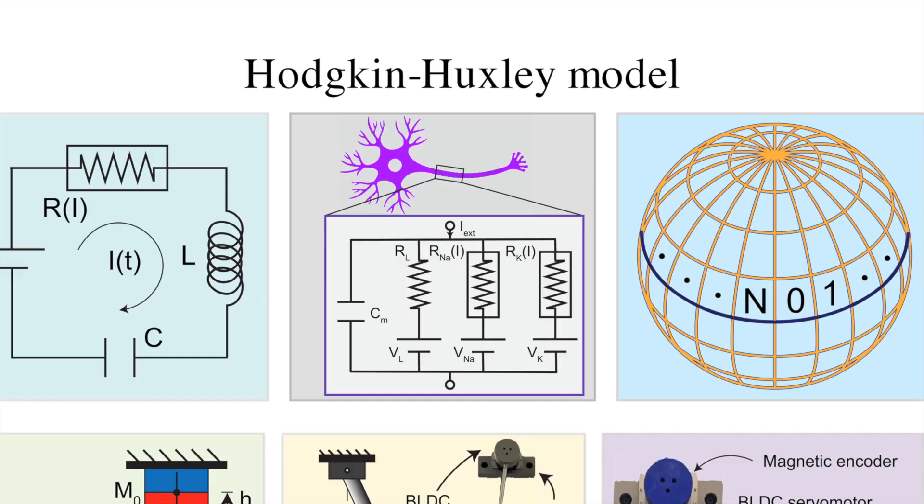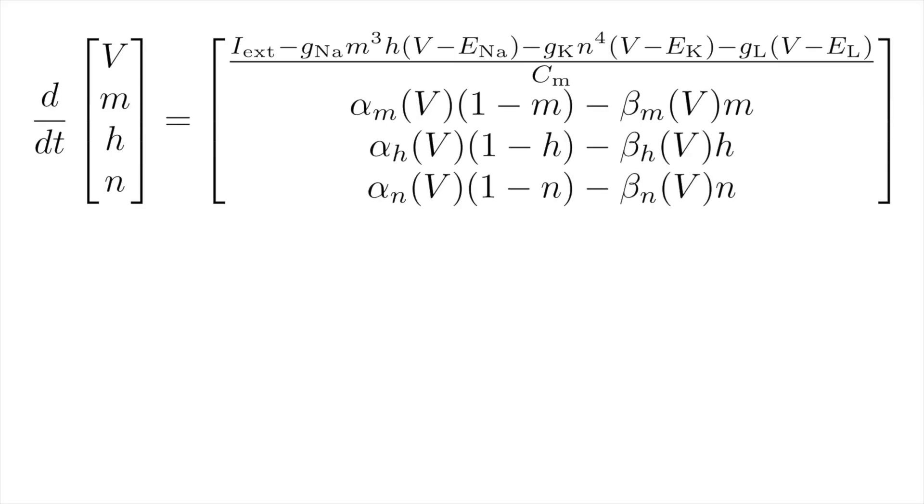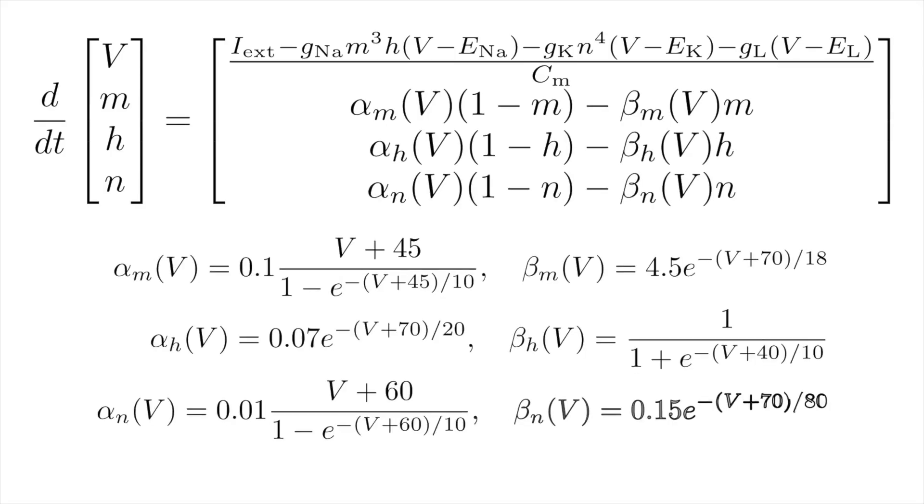Our approach works with highly nonlinear limit cycles as well. The Hodgkin-Huxley model, which earned them both the Nobel Prize in Physiology and Medicine, has four states and extremely nonlinear dynamics that are shown here. The alpha and beta parameters are also nonlinear exponential functions of the voltage.